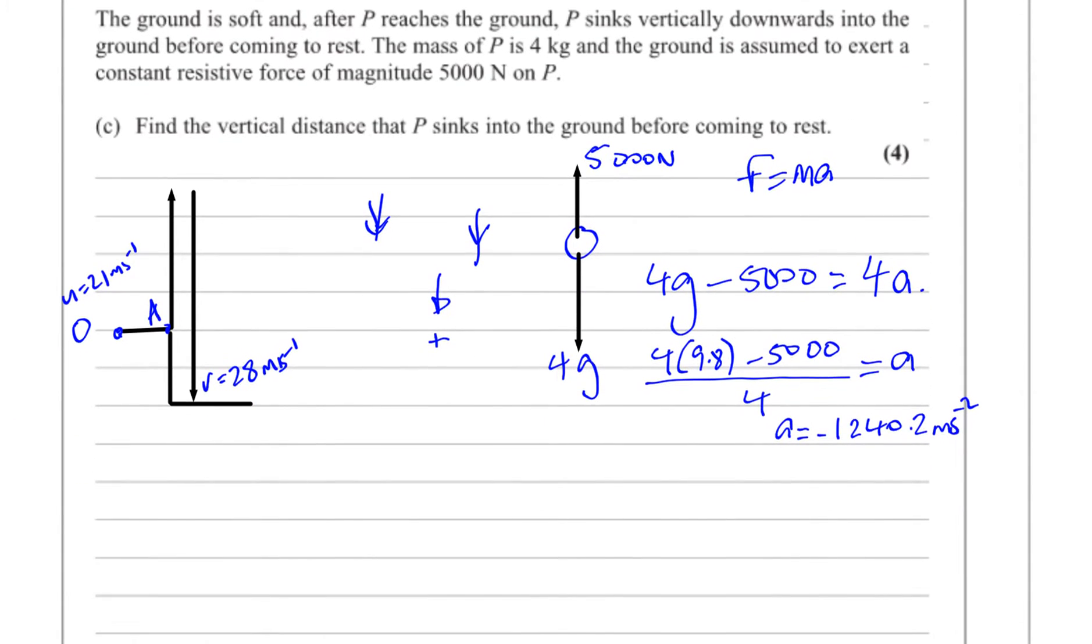So now what we're going to do is use the SUVAT equations to find the vertical distance it travels before it comes to rest. Now we have a situation where it's entered the ground at this point, say it's entered the ground at this point, it's come to rest at this point. As it enters the ground, its speed is the speed with which it hits the ground, which is 28 meters per second. So, this is now, in the new situation that's developed after it hits the ground, this is now its initial velocity. And I'm going to take down as positive as it's moving down at this point. We're talking about this situation, new situation where, after it's hit the ground, it's moving downwards, so I'll take down as positive.